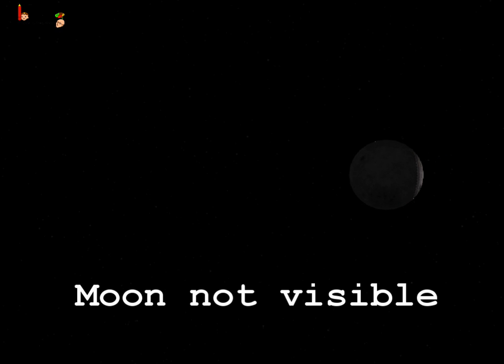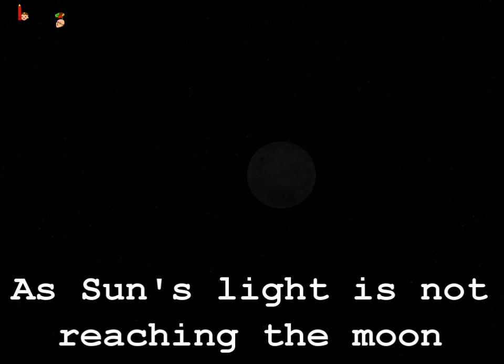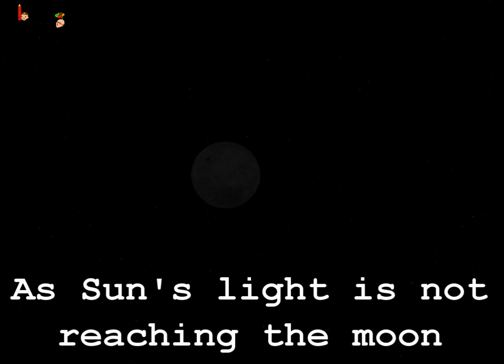And as you can see from Earth, the Moon is not visible because the Sun's light is not reaching the Moon and Moon doesn't have its own light. So the people on Earth are not able to see the Moon.